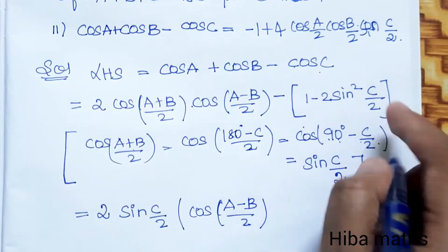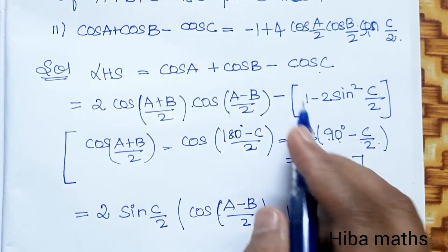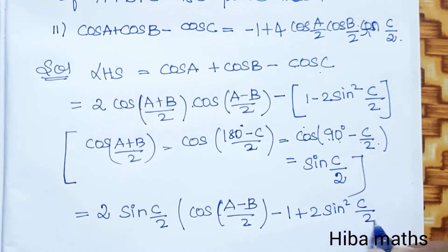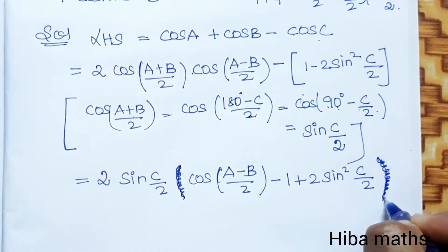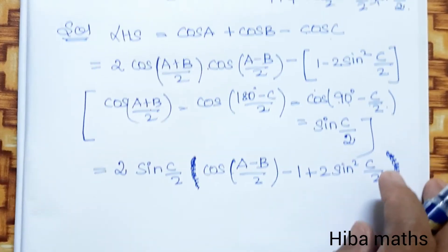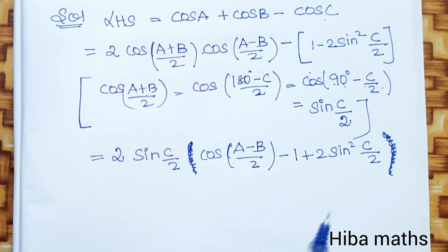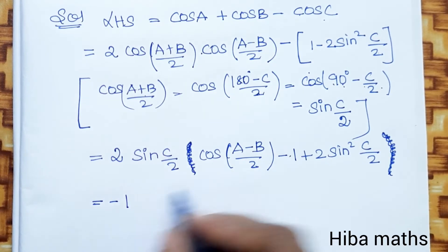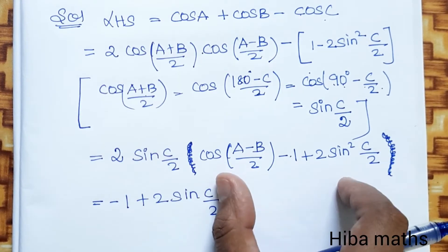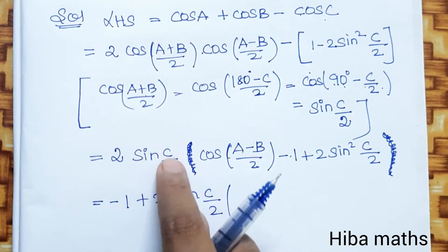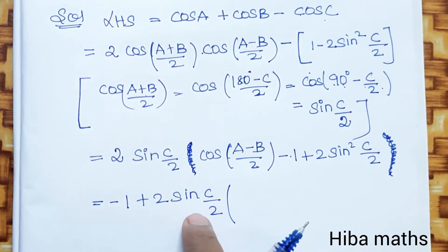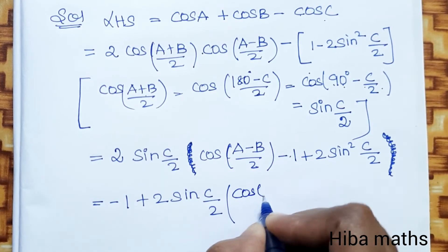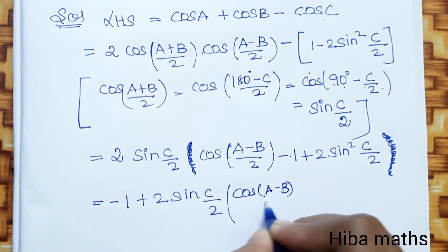Now combining the terms: we bring in the minus 1 from expanding cos C. Inside the brackets we have minus 1, and the minus sign before the cos C term gives us minus 1 overall. We balance and keep minus 1.